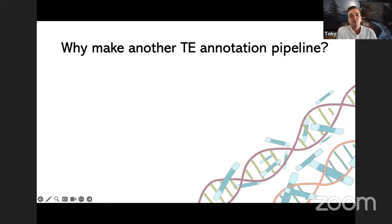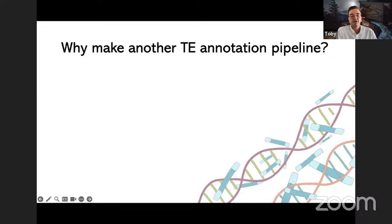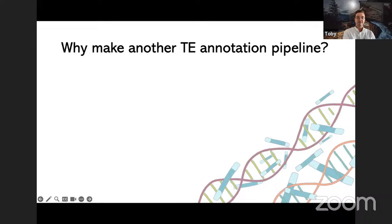The main question I get is: why have you made another TE annotation pipeline? The simple answer is that TE annotation is really complicated. We still don't really know enough about the nature and diversity of TEs to automatically identify and classify them well. Combined with the complications in their biology and the dynamics of how they interact with host genomes, it's really difficult to accurately identify TEs, particularly if they're degraded or turned over.